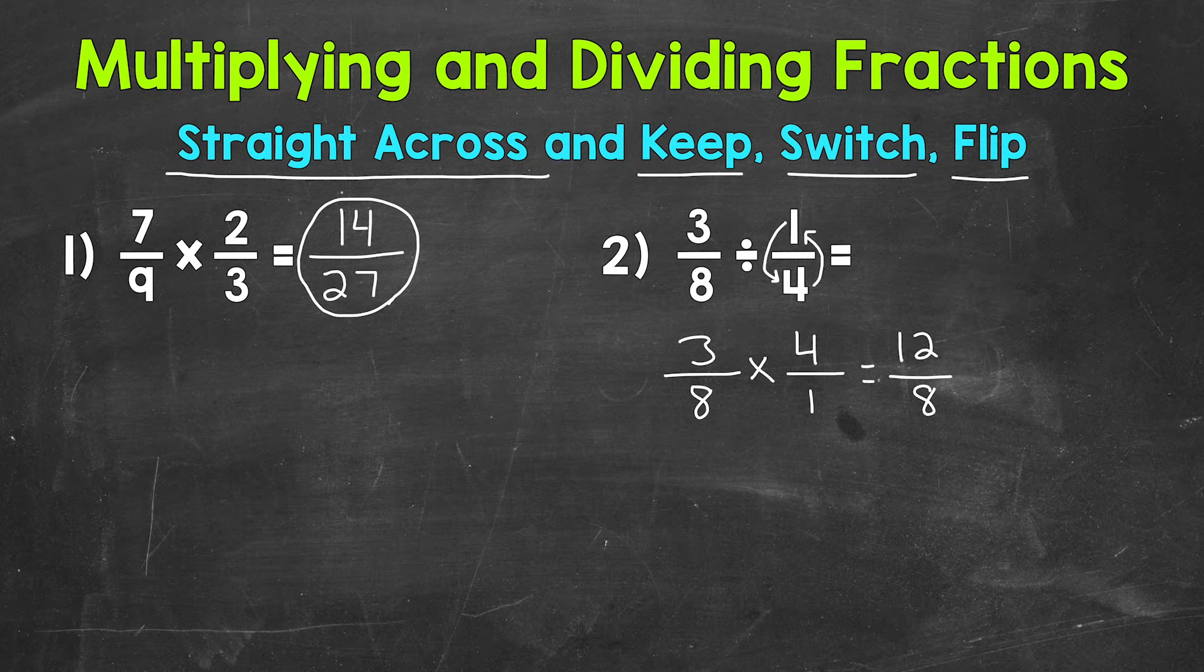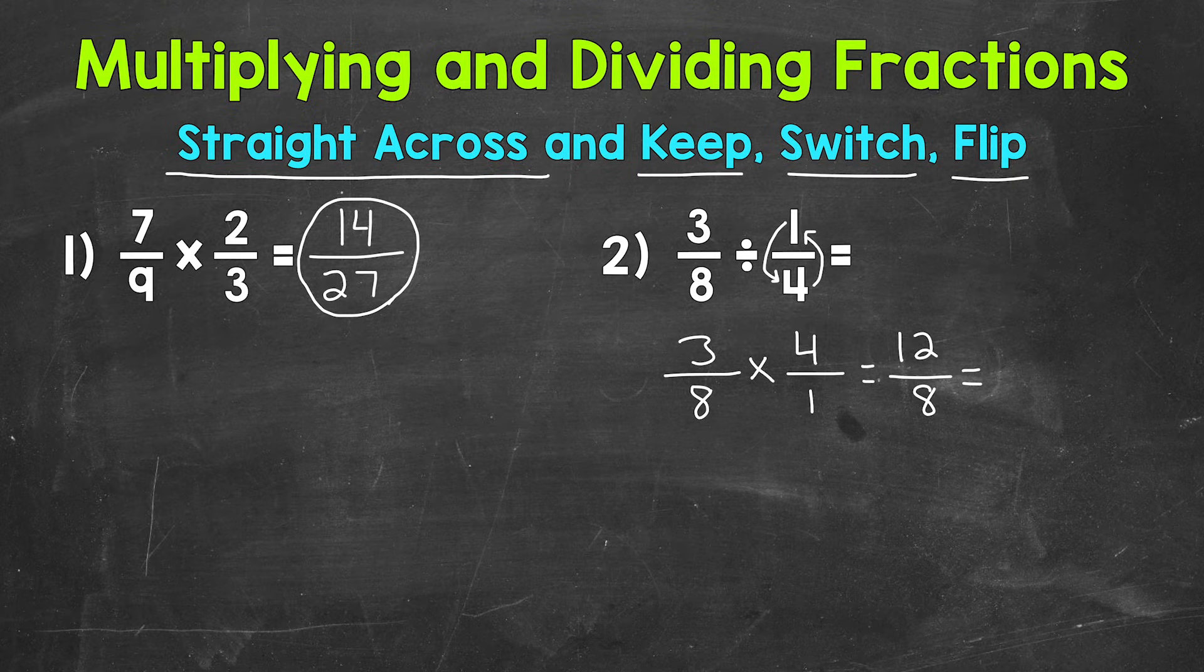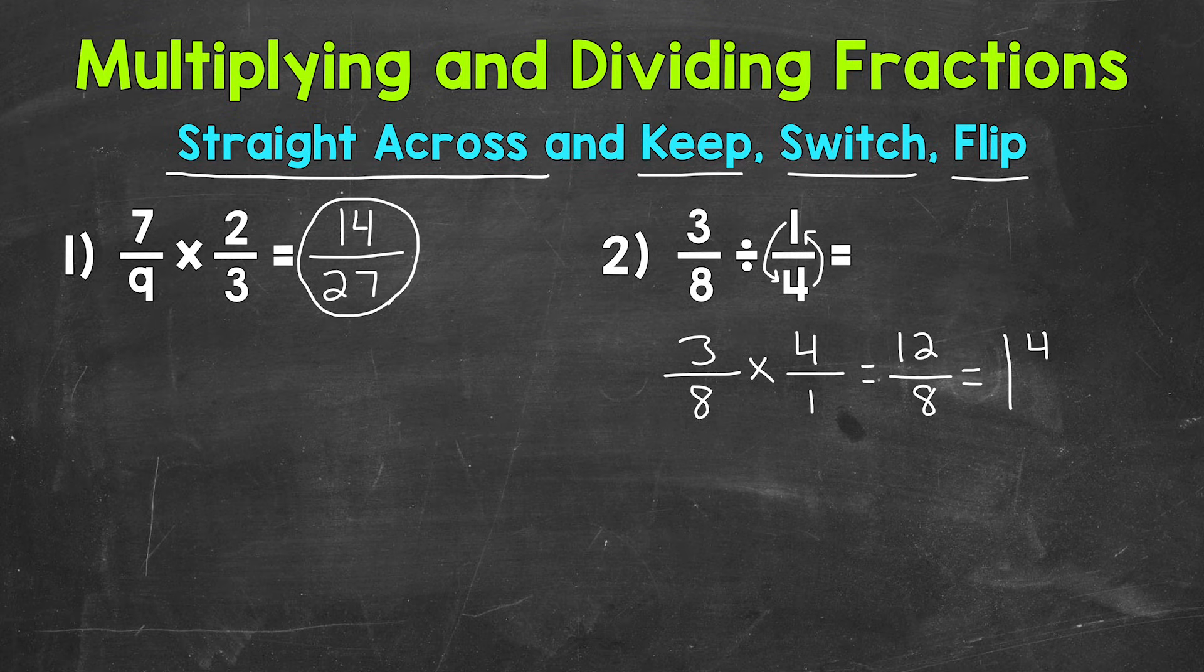We get 12 eighths, which is an improper fraction. So we want to convert this to a mixed number. We do that by doing 12 divided by eight. So how many whole groups of eight can we pull out of 12? One whole group of eight. That's our whole number. Now we don't hit 12 exactly. We have a remainder of four. That's our numerator. And we keep our denominator of eight the same. So we get one and four eighths.